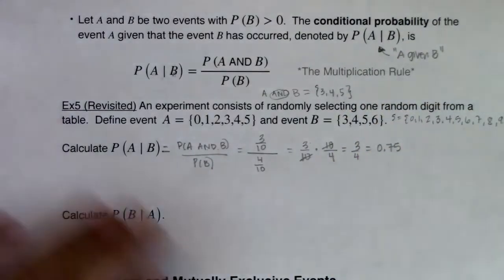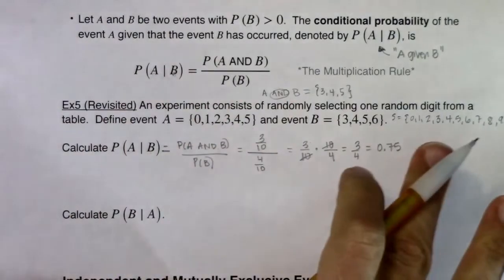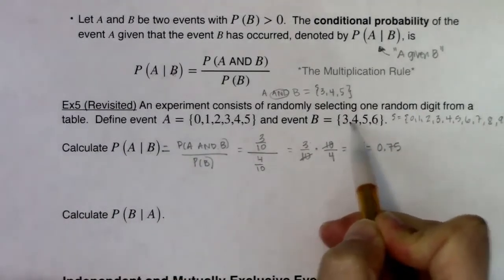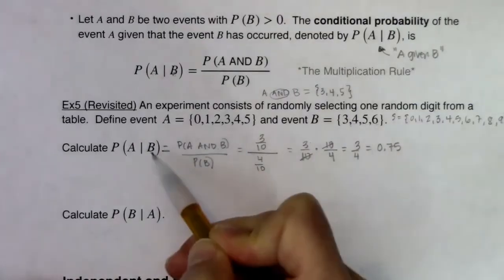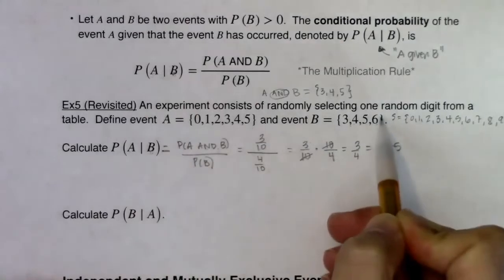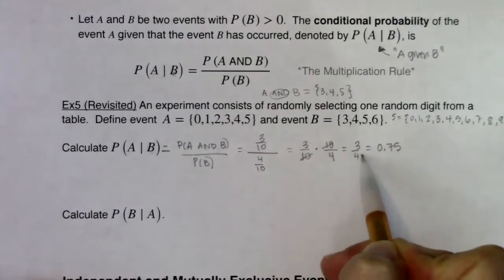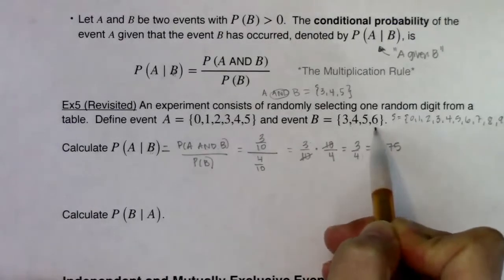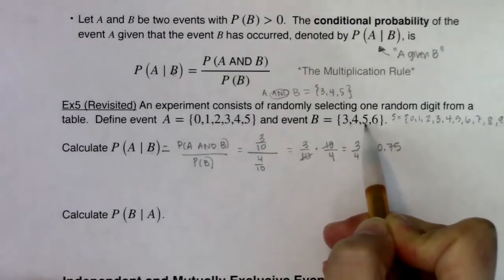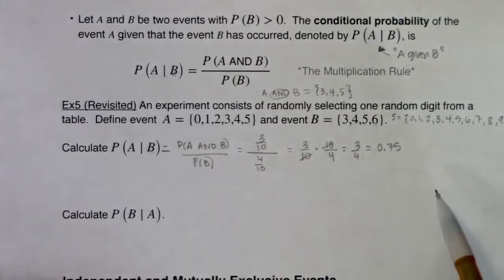Let's get a feel for what this means. Event B happened — I went to my random digit table and definitely picked one of these four digits: 3, 4, 5, or 6. Given I've picked a 3, 4, 5, or 6, out of those four options, what was the likelihood I also picked a digit in A? Three of those four options are in A — that's why we get a 75% chance.